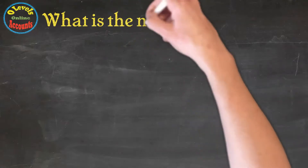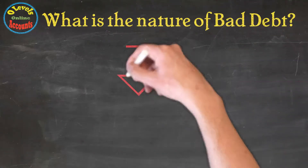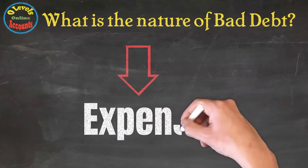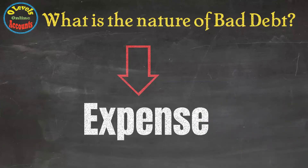As far as the nature of bad debt is concerned, it is an expense. Because the company failed to receive its funds against the credit sale, and losses are expense in nature. So bad debts fall in this category.